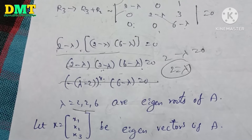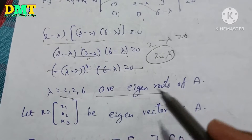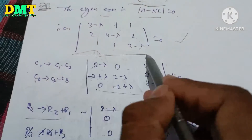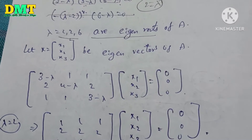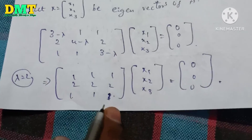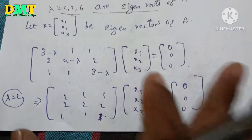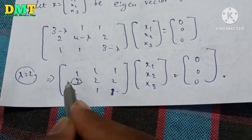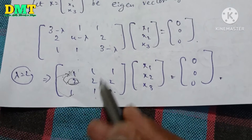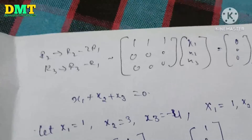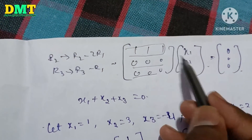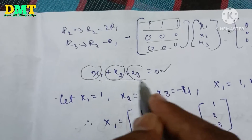So 2 minus lambda equal to 0, giving lambda equal to 2. Lambda values are 2, 2, 6. Now we have the eigenvalues. We have to find the eigenvectors. For the first equation, substituting lambda equal to 2: the matrix is (3 minus 2), 1, 1, 2, (4 minus 2), 2, 1, 1, (3 minus 2) into [x1, x2, x3] equals [0, 0, 0].